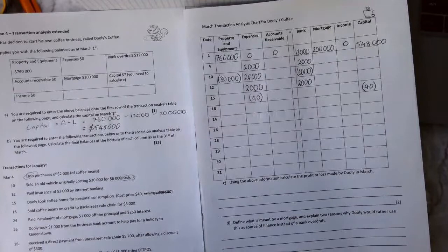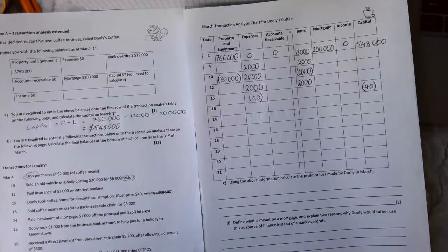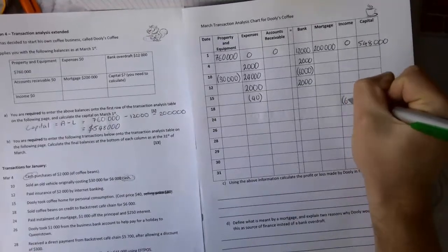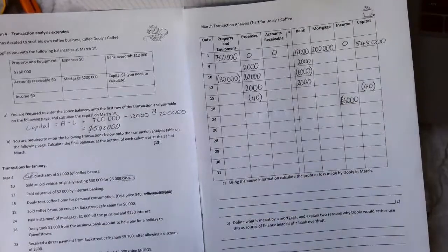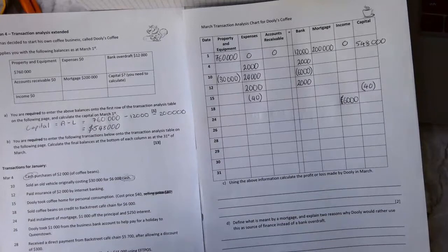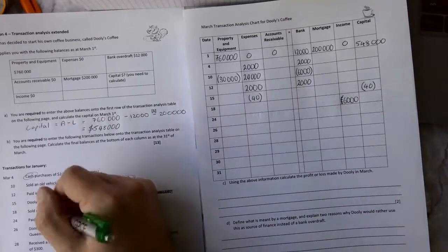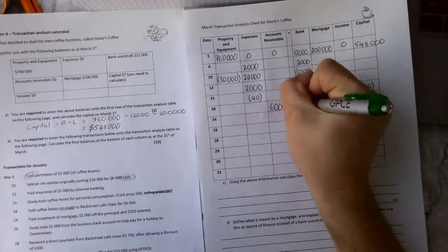On the 18th, we sold coffee beans on credit, massive word there, on credit, to Backstreet Cafe for $6,000. So we sold something, so sales. We know sales is an income, so that's going to come under income. It's not going to be negative, it's going to be positive. And the other one we go to is sales, and we've done it on credit. Remember, that's a key word. So it's going to be accounts receivable because they have not paid for it yet.